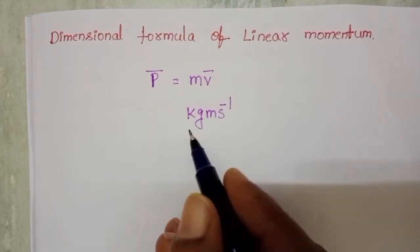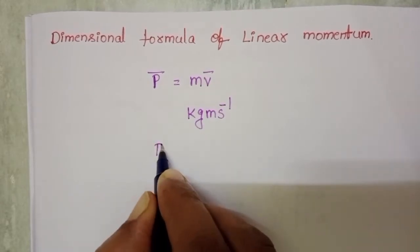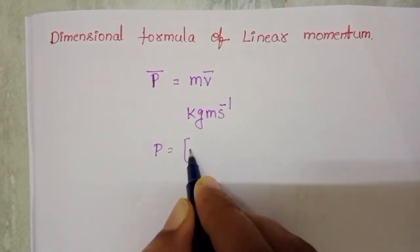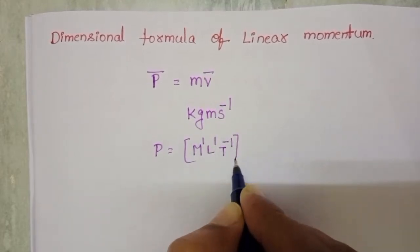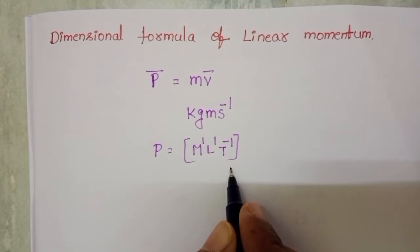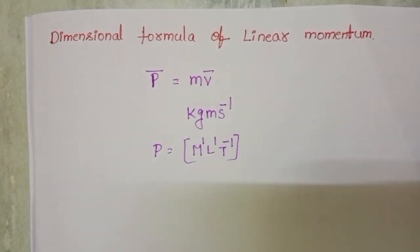The dimensional formula of linear momentum is M power 1, L power 1, T power minus 1. This is the dimensional formula of linear momentum.